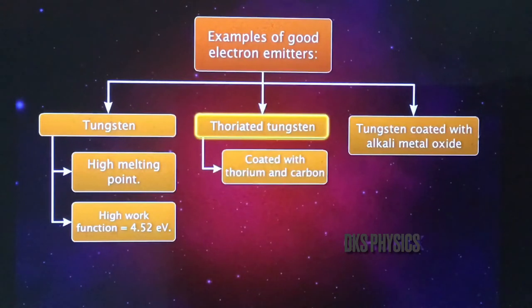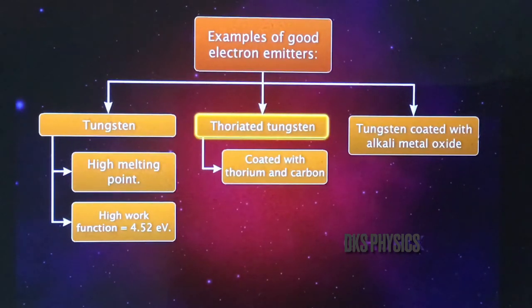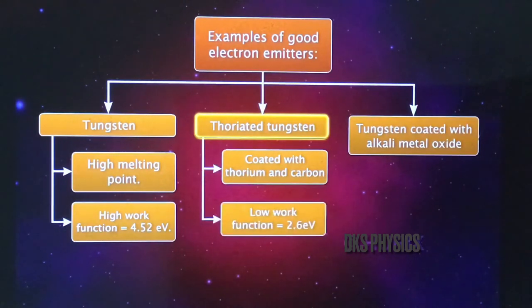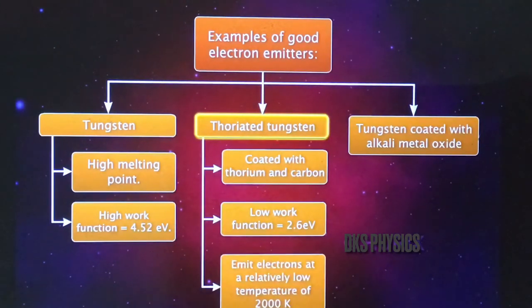Thoriated tungsten is tungsten coated with thorium and carbon. An advantage of using thoriated tungsten as an electron emitter is that it has a low work function of 2.6 electron volts. Hence it can emit electrons at a relatively low temperature of 2000 kelvin.